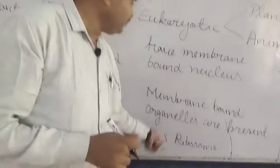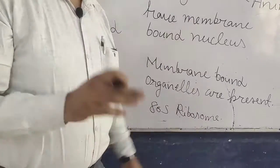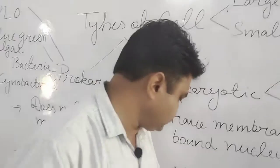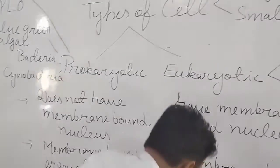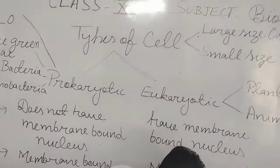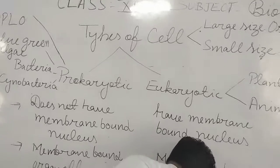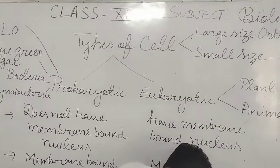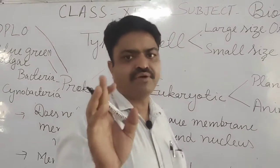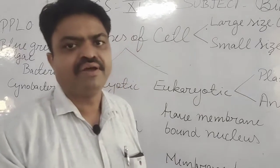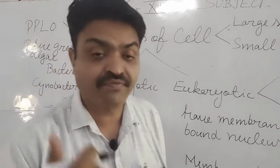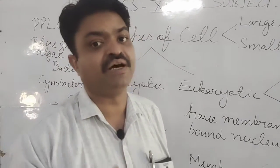Eukaryotic cells also have the 70S ribosome. These 70S ribosomes are found in the mitochondria and plastids. Plastids are found in the plant cells.